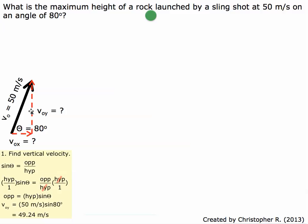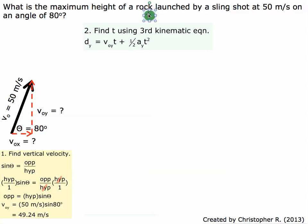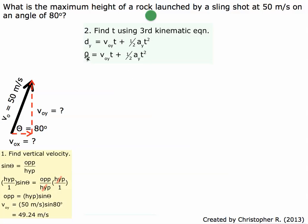Now we know the vertical velocity. The next step is to find the time it takes for the rock to reach maximum height. One key point: the time to reach the top is half the total time of the arc. So we need to find the total time from launch back to the ground and divide by 2. We're going to use the third kinematic equation: D equals VT plus half AT squared. Because the vertical distance is 0 for a Type 2 problem, we set D equal to 0. Now we isolate t, which takes a couple of steps.